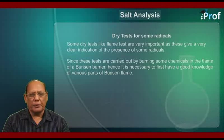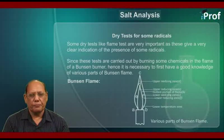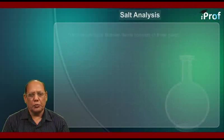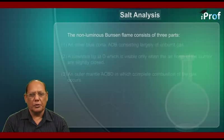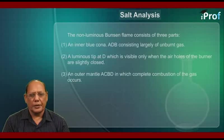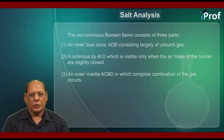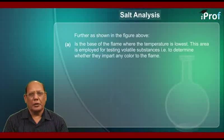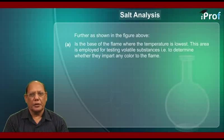The figure of the Bunsen flame is given here. The non-luminous Bunsen flame consists of three parts: first, an inner blue cone ADB consisting largely of unburned gas; second, a luminous tip at D which is visible only when the air holes of the burner are slightly closed; third, an outer mantle ACBD in which complete combustion of the gas occurs.